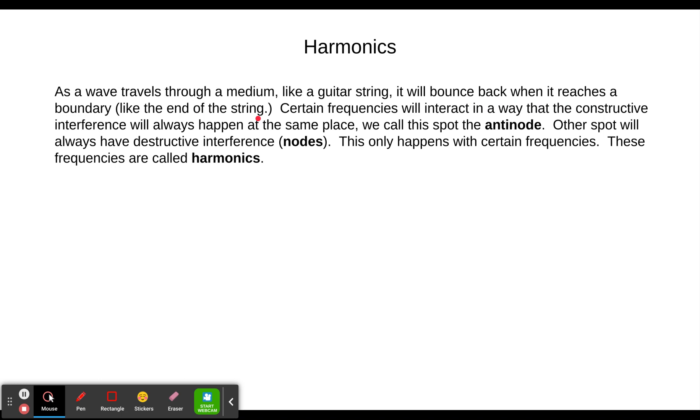We'll talk about the air columns next time. Certain frequencies interact in a way that constructive interference will always happen in the same place. We call this spot an anti-node. A jump rope is a great example that the center of it, the waves are technically traveling back and forth, and we get an anti-node in the center. Same thing happens with a guitar string or piano string, violin string.